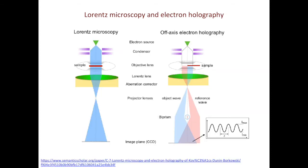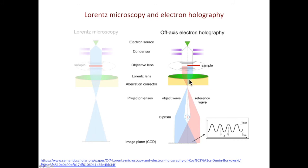Moving on to electron holography. The instrument is very similar to the Lorentz microscope — again, the Lorentz lens replaces the objective lens here. There are some differences though. The first is the sample: you don't have the entire sample interacting with the beam. Part of the electron beam does not interact with the sample and is called the reference beam, while the other part interacts with the sample and is called the object beam. You also have a biprism to separate the reference beam and the object beam. Since the reference beam and the object beam have different phases, they form an interference pattern on your screen.